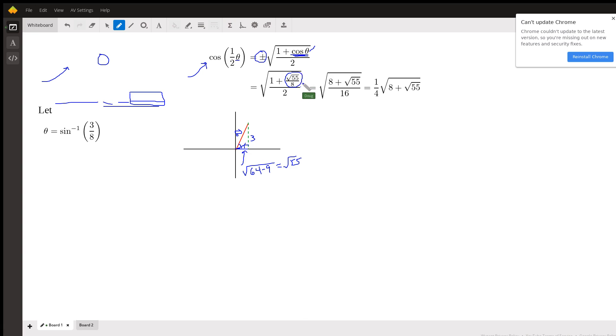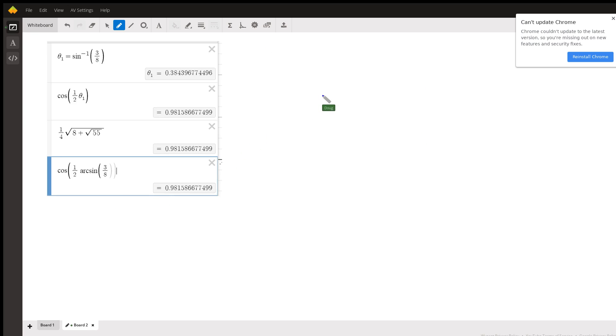You could multiply top and bottom of the big fraction by 8. That's called simplifying a complex fraction. So we get 8 plus the square root of 55 over 16. But we can take the square root of the 16, which is in the denominator. So there's your answer right there, the exact value.